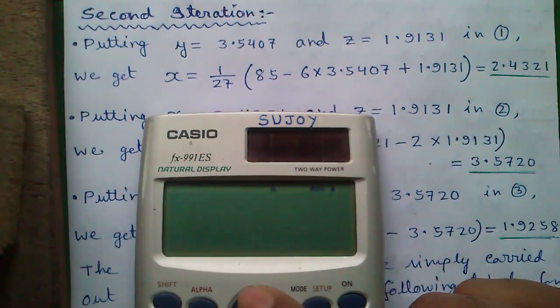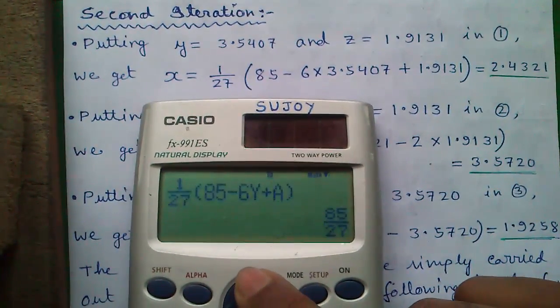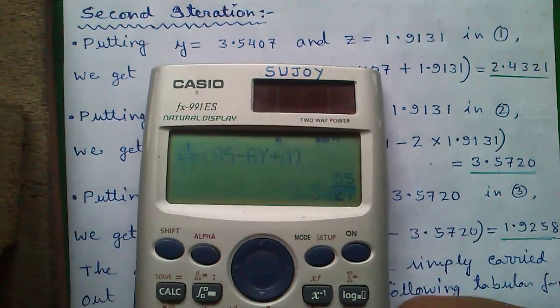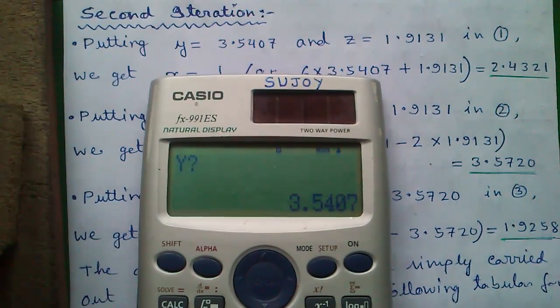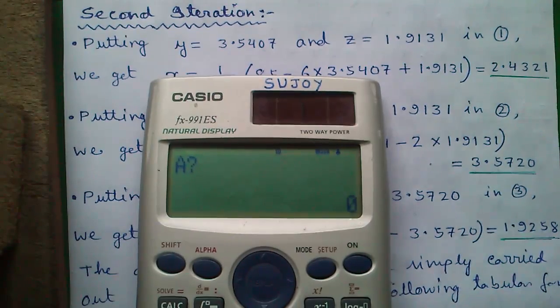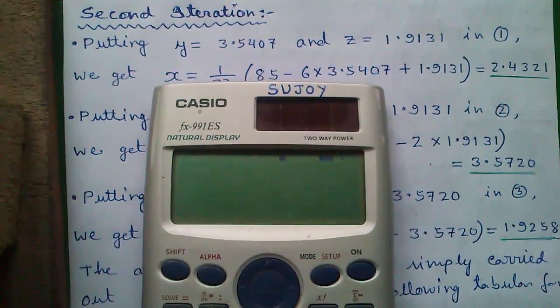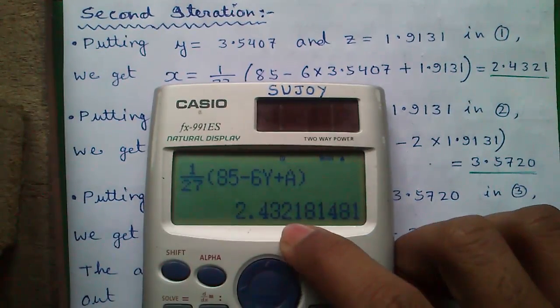For second iteration simply press the joystick up and find your required expression and just press calc. You don't have to enter it again. So y is now 3.5407, press equals, and z is 1.9131. Press equals. You will get x equals 2.4321.